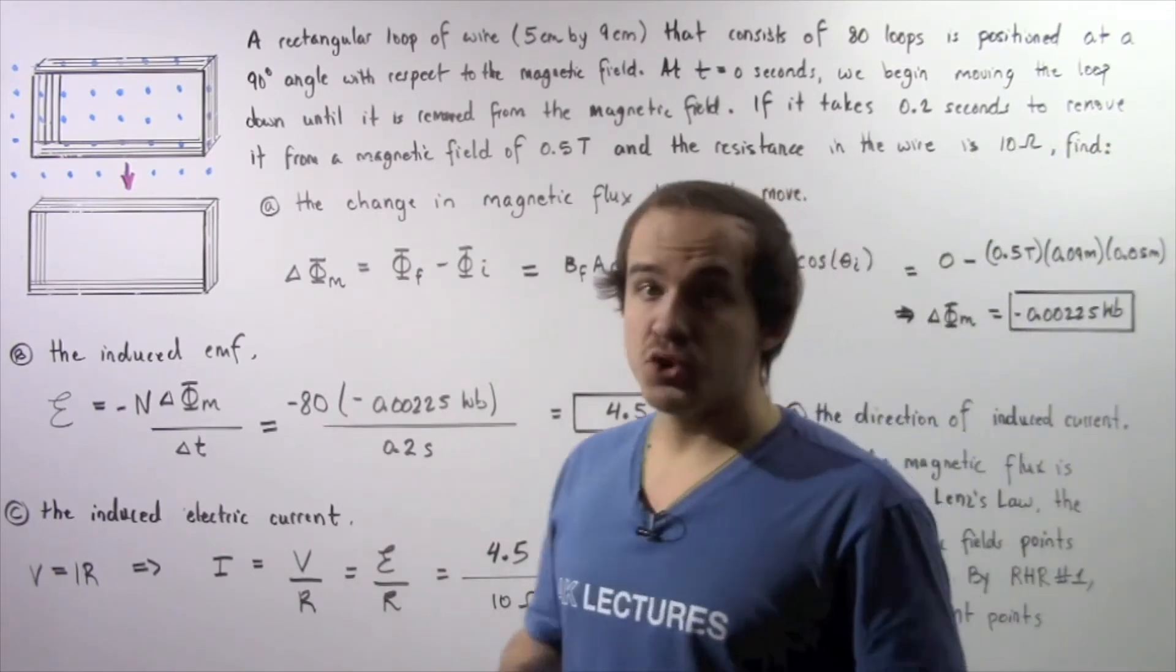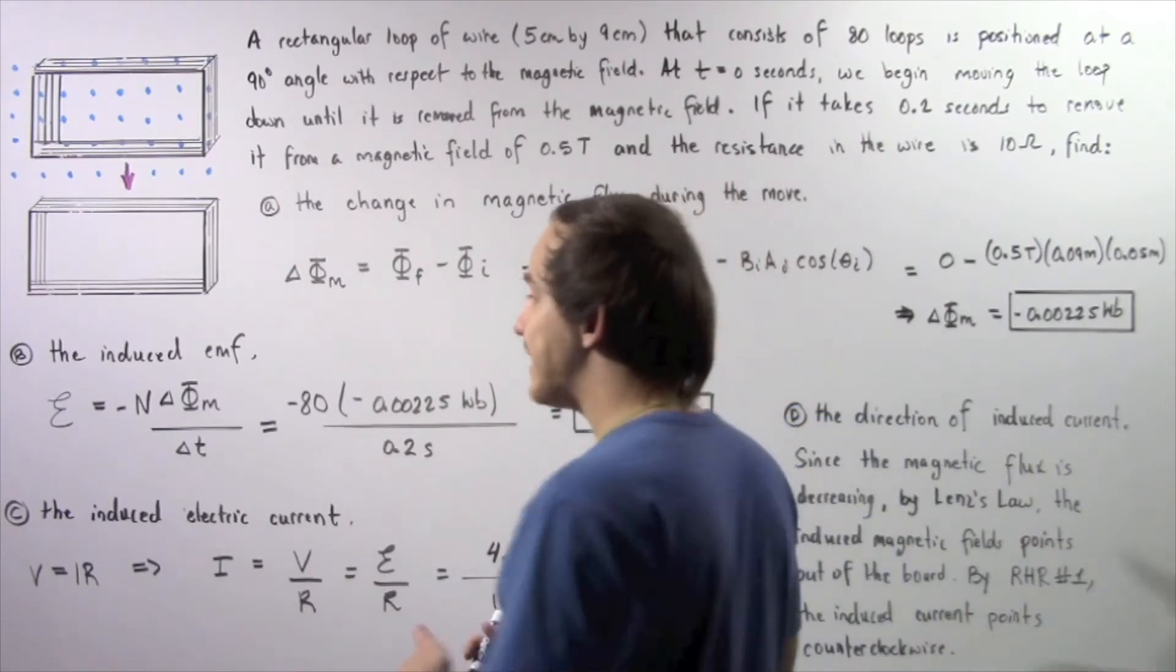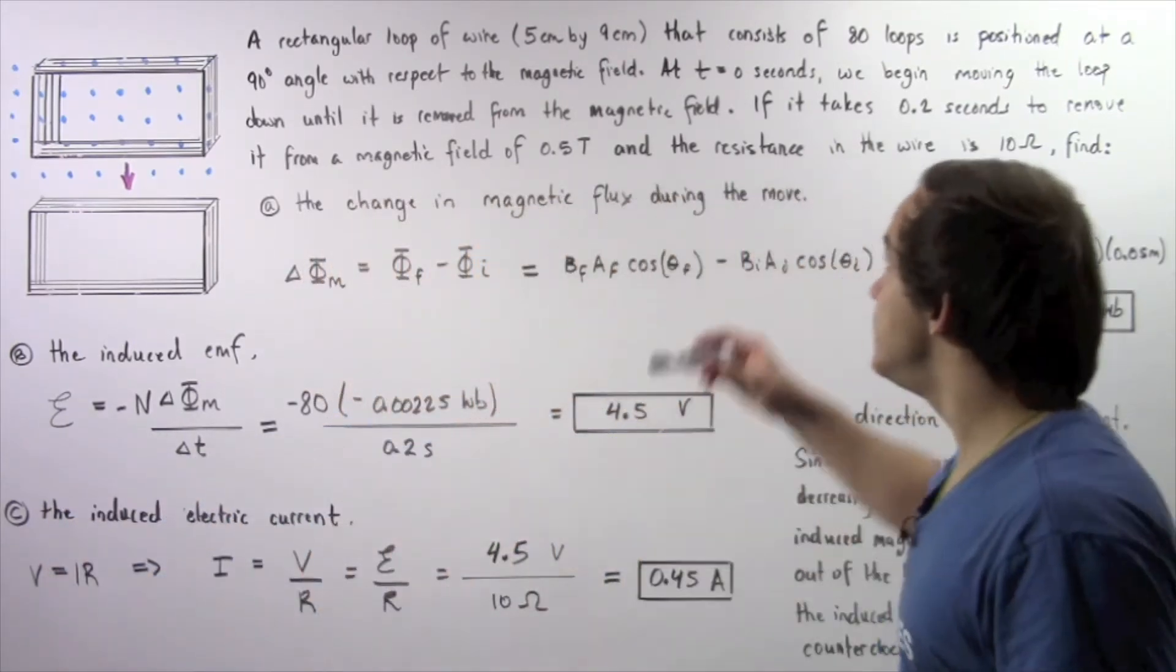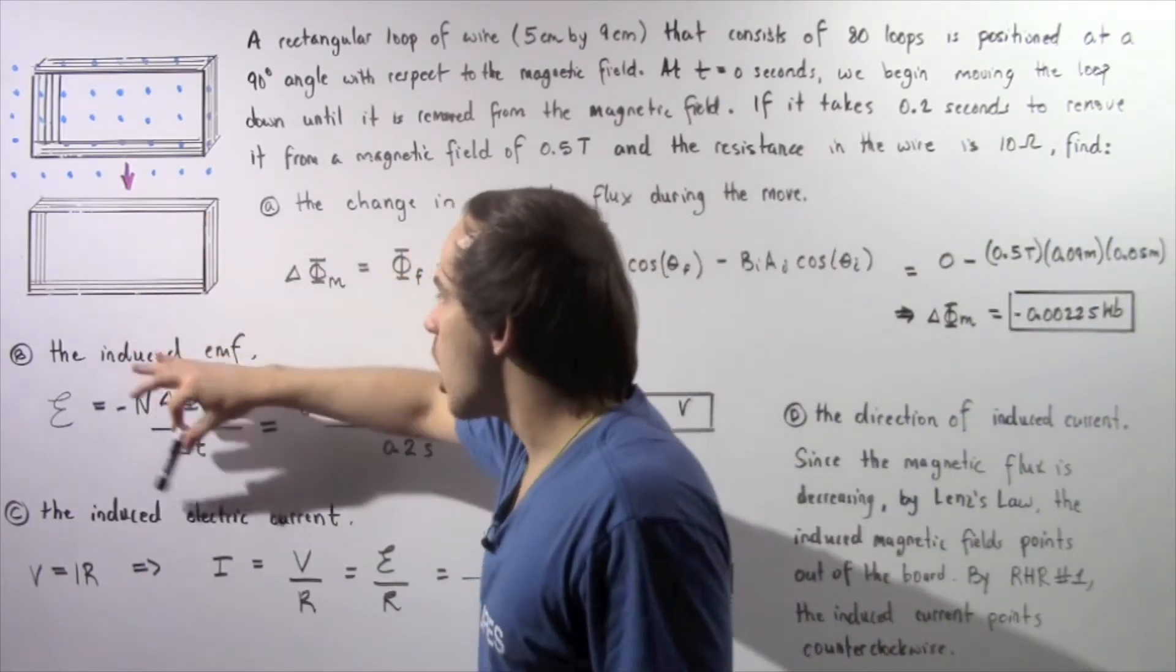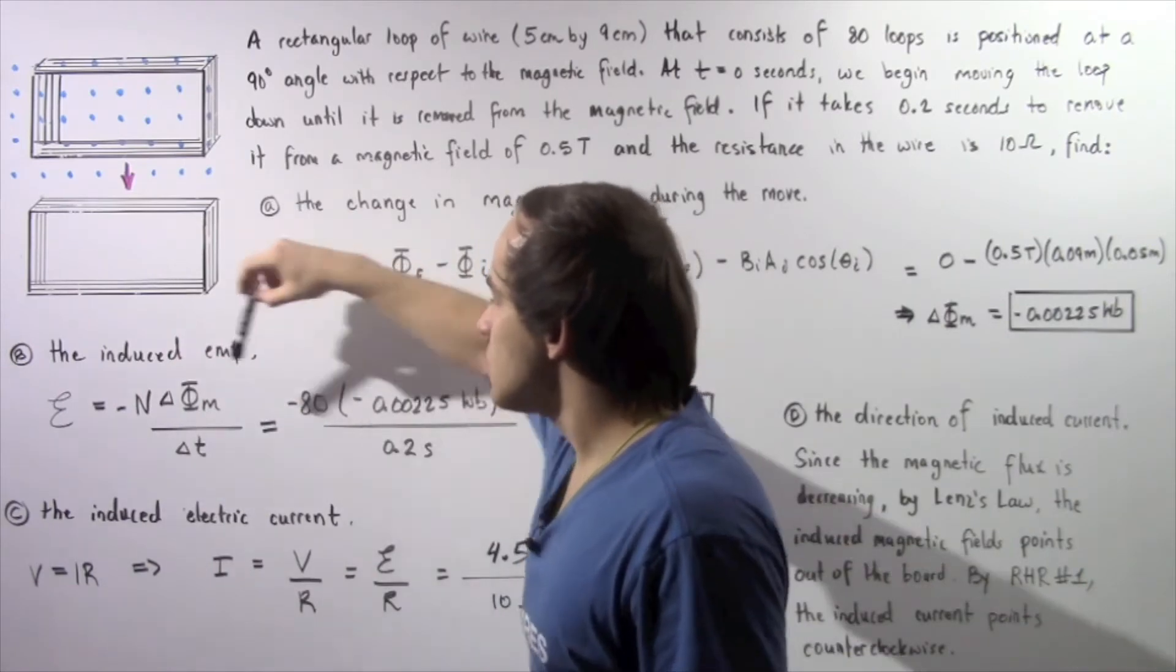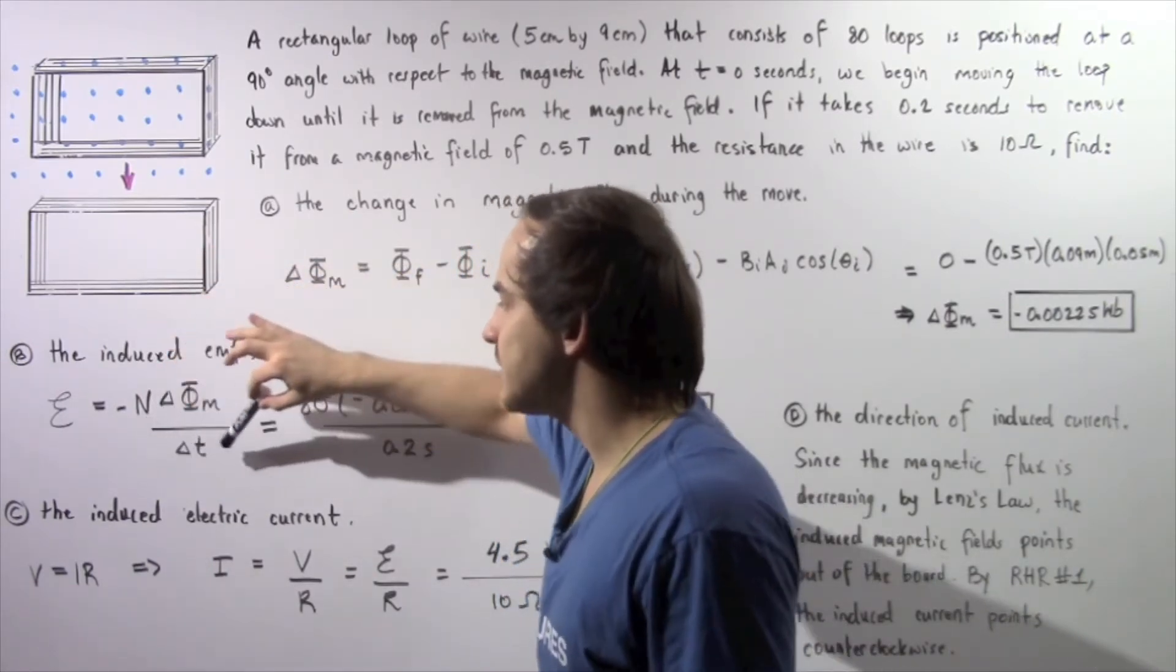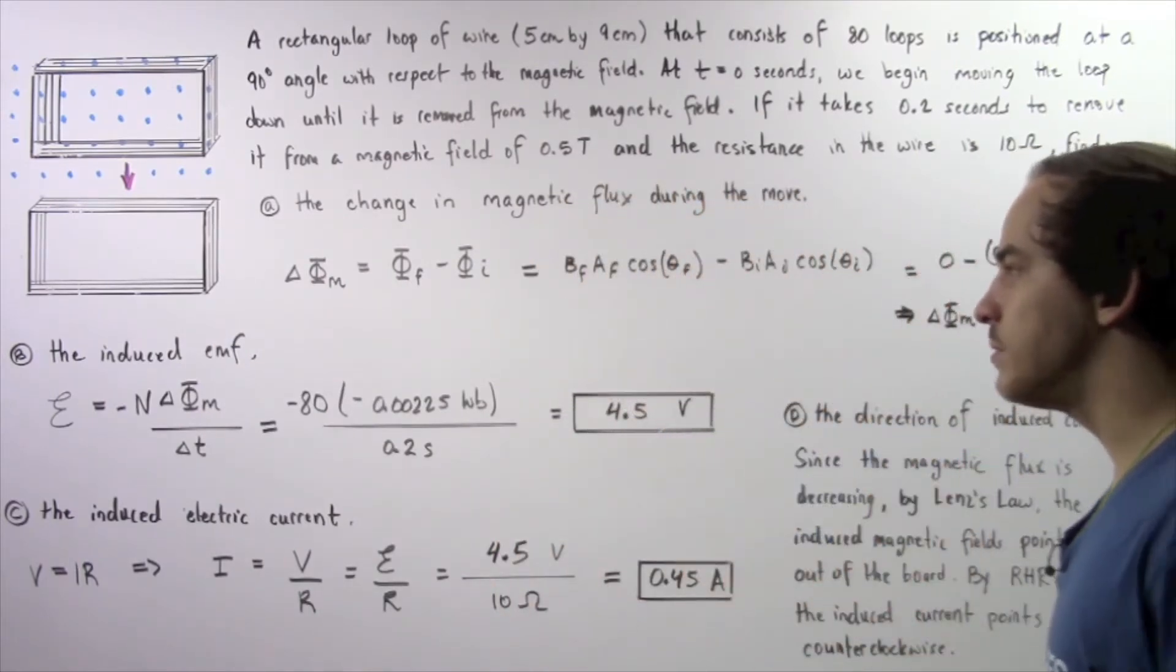Now let's move on to step two. Find the induced EMF. So recall that induced EMF is equal to negative N, the number of loops of wire multiplied by the rate of change of our magnetic flux. So the change in our magnetic flux divided by the change in time, the time it takes for that change to take place.